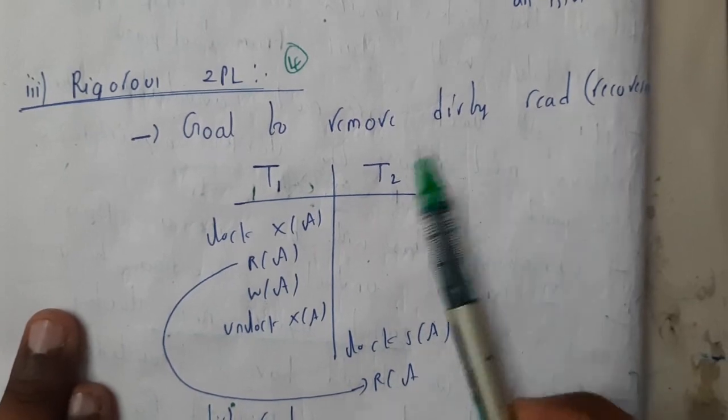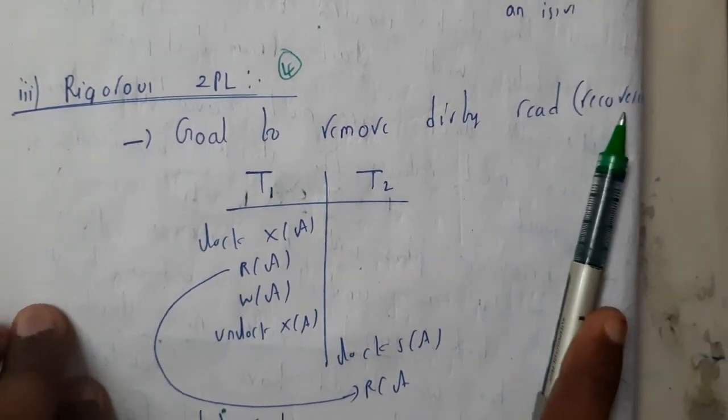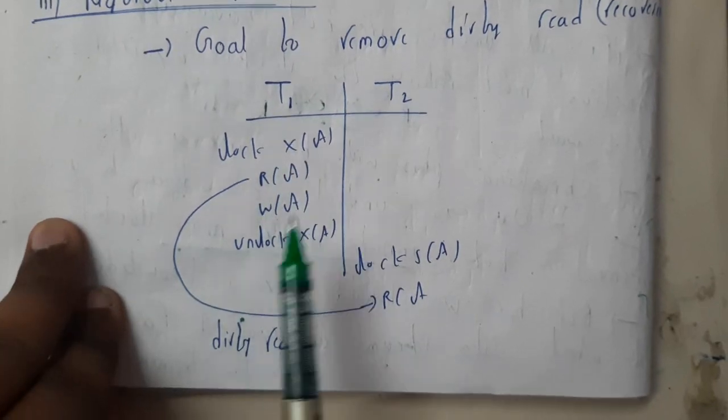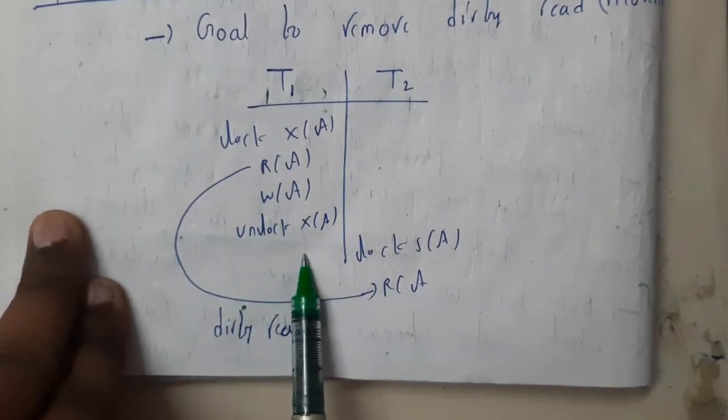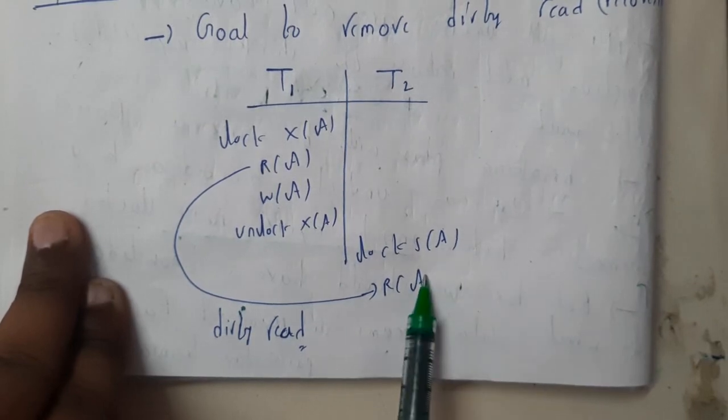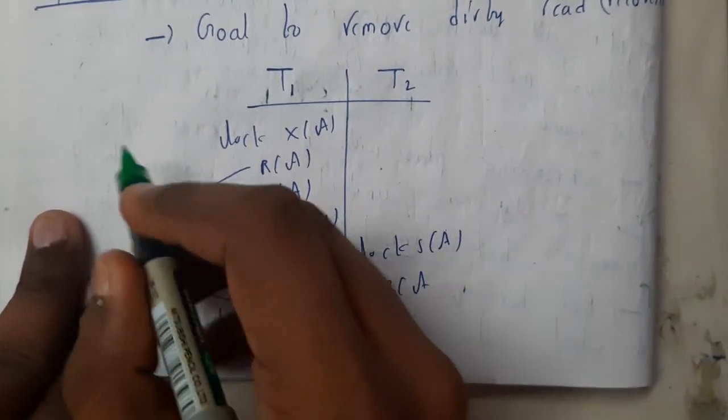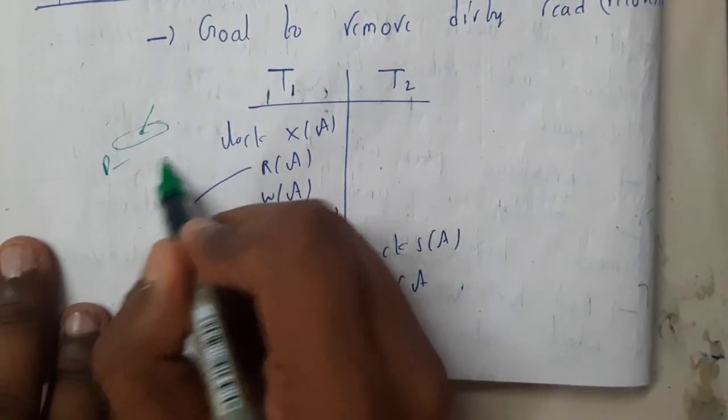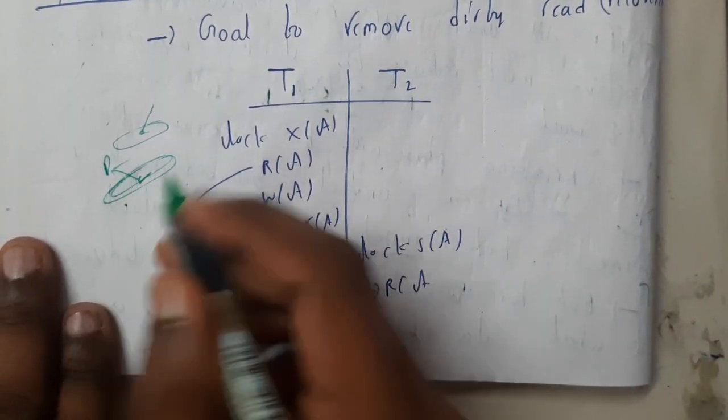What is dirty read? If you write data and forget to commit, then read that data, that's a dirty read. You may ask what is dirty write - it's when you write data without reading it first, resulting in garbage or random values.